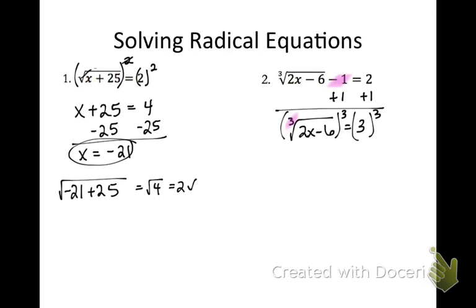The cube root and the cubed cancel out on the left, and I just get 2x minus 6. And on the right, 3 to the third is 27. So now I can add the 6 over, and then divide by 2. So I get x equals 33 over 2.